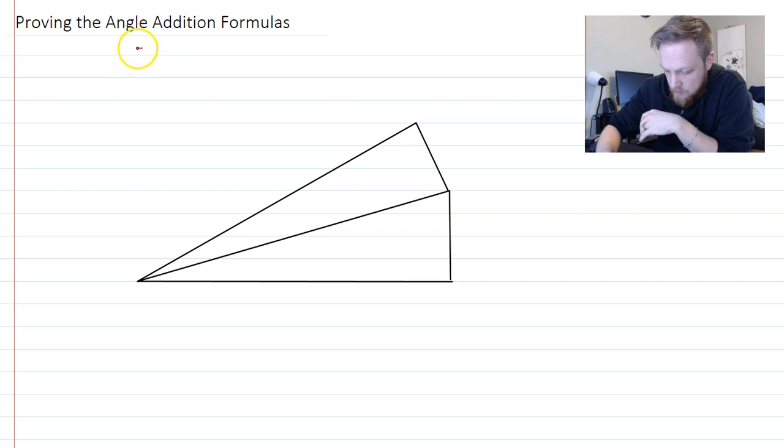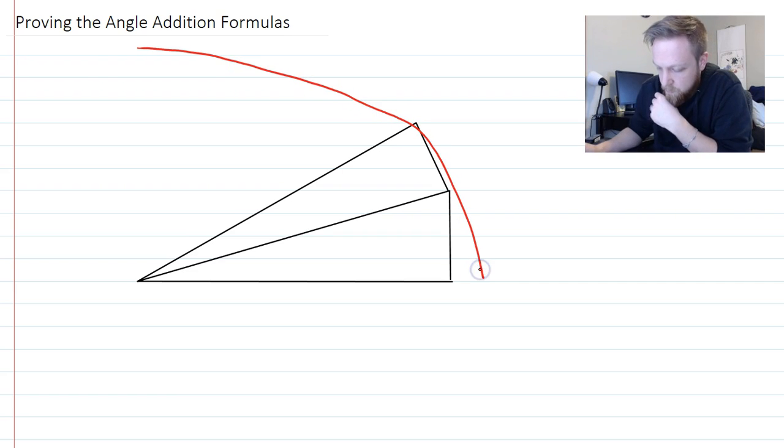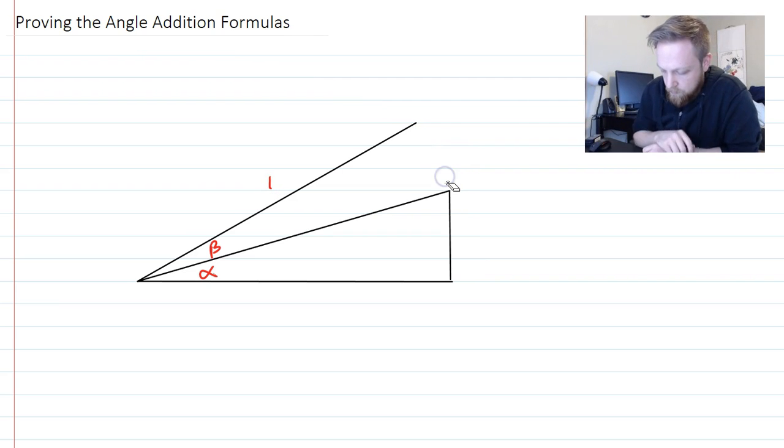So I want you to imagine that we have our unit circle here, and that we've rotated alpha and beta. The radius here is going to be 1.